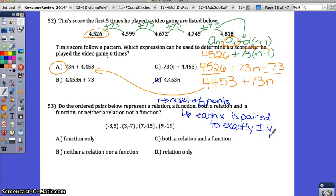So when you're looking at these points, we have a group of points. It's going to be a relation, so you can rule out b and d. Then also, is it a function? Well, is each x paired to exactly one y? Look at your x values.